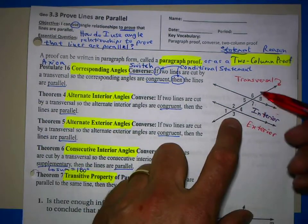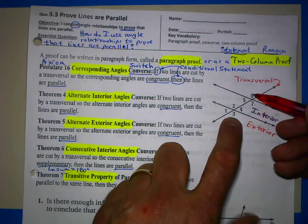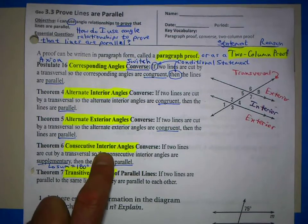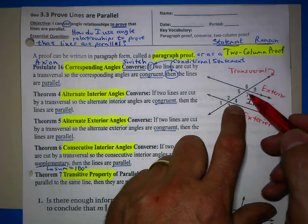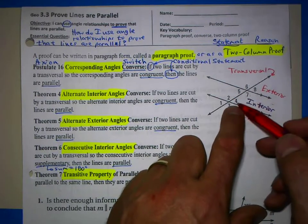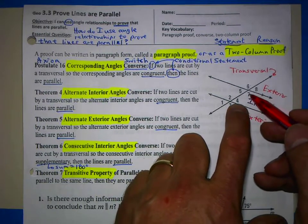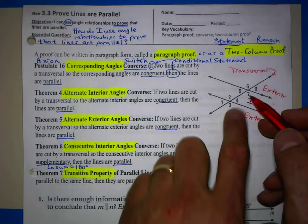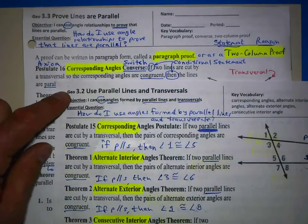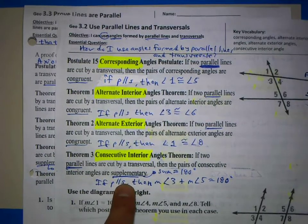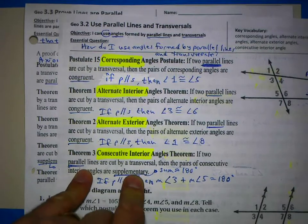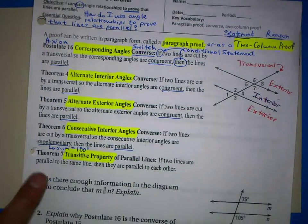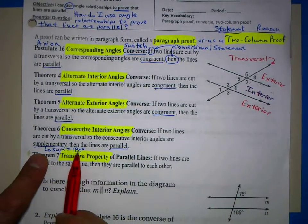Alternate exterior: if angles 6 and 3 are congruent, then the lines are parallel. Consecutive interior angles — for example, angles 4 and 7, or angles 2 and 5 — note that it's not if they're congruent; it's if they're supplementary that the lines are parallel. The converse of the consecutive interior angles theorem: if the consecutive interior angles are supplementary, meaning their sum equals 180 degrees, then the lines are parallel.